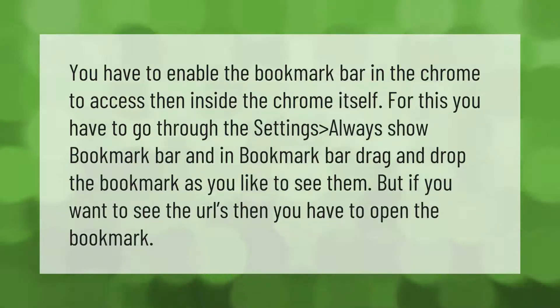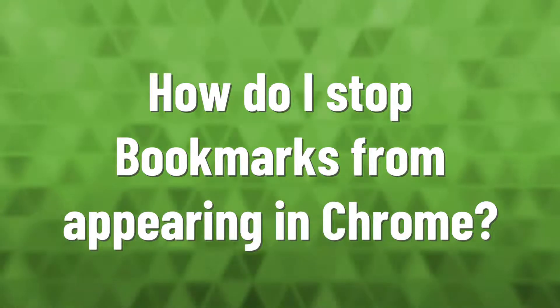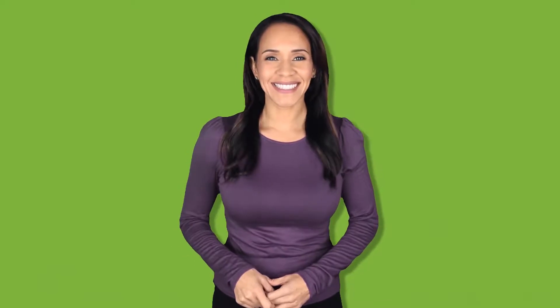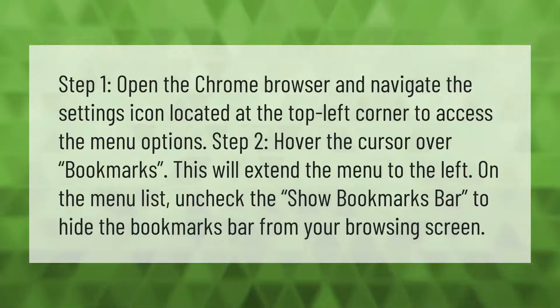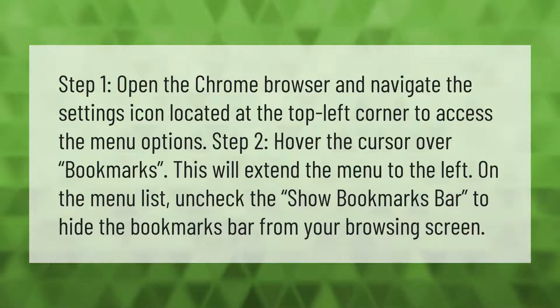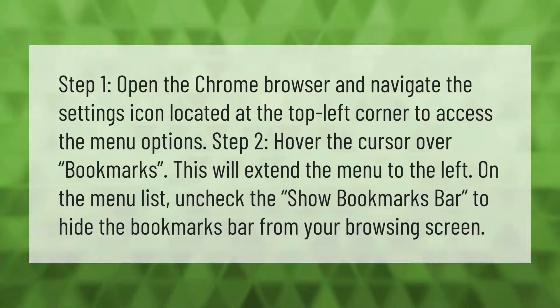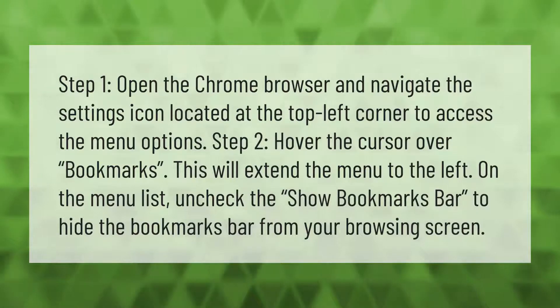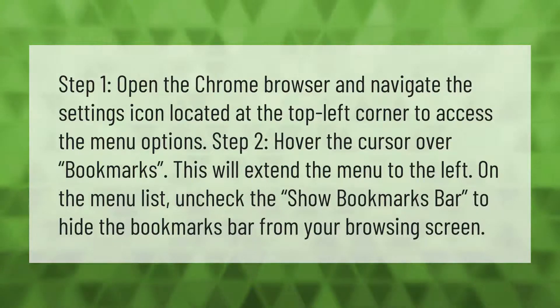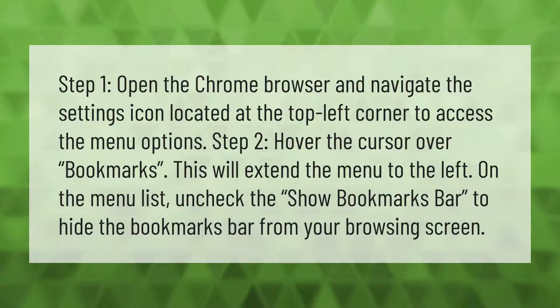Step 1: Open the Chrome browser and navigate to the settings icon located at the top left corner to access the menu options. Step 2: Hover the cursor over Bookmarks — this will extend the menu to the left. On the menu list, uncheck 'Show bookmarks bar' to hide the bookmarks bar from your browsing screen.